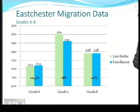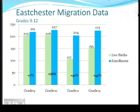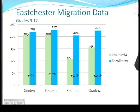Looking at grades 6 through 8, we'll observe that the increase or decrease is a little bit more tempered. In grade 8, in fact, there were 238 live births for that cohort of students, and there are 238 students in the district in grade 8. At the high school grades 9 through 12, grades 9 and 10 show a moderate increase, while students in grades 11 and 12 have a more dramatic increase in the number of students compared to live births and enrollments.